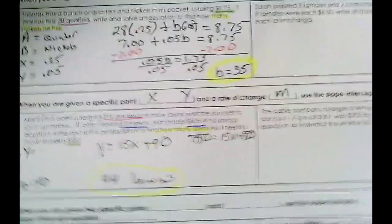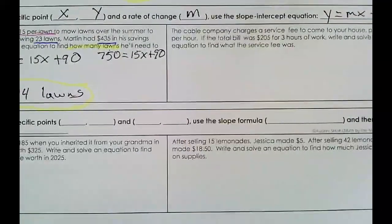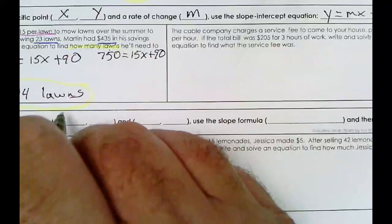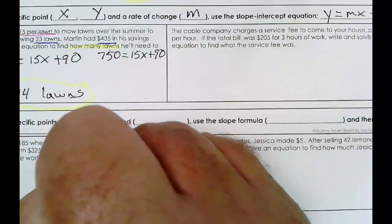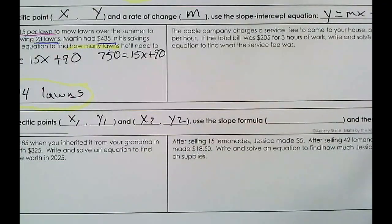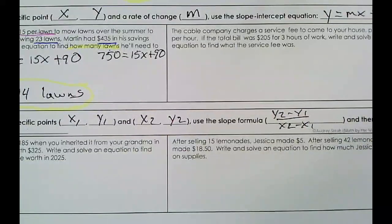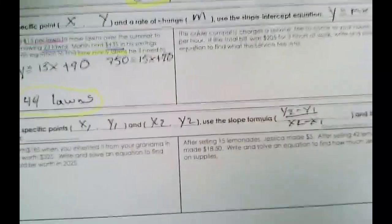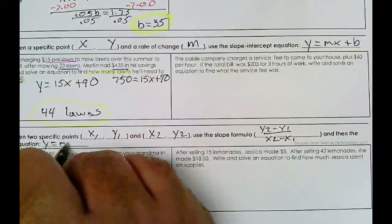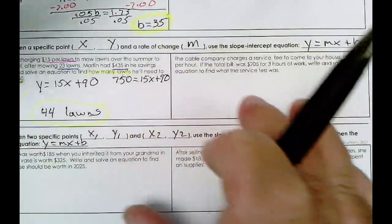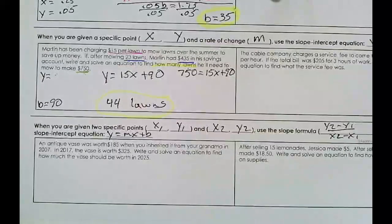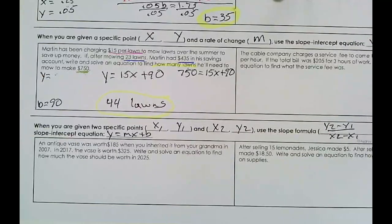The last example: when you are given two specific points — x1 and y1, and x2 and y2 — you can use the slope formula (y2 minus y1 over x2 minus x1), and then the y = mx + b slope-intercept formula. An antique vase was worth $185 when you inherited it in 2007. In 2017, the vase is worth $325. Write and solve an equation to find out how much the vase should be worth in 2025.